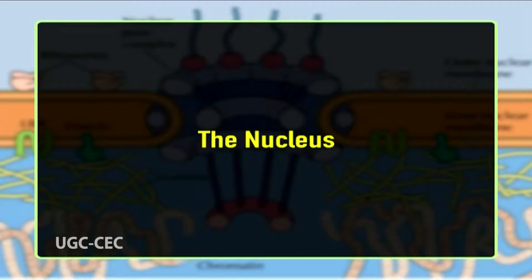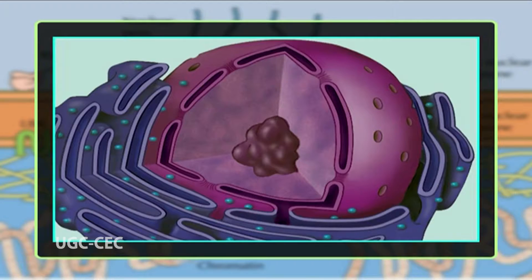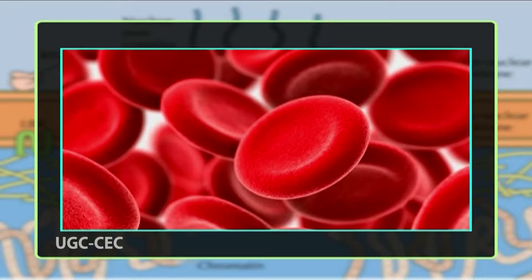The nucleus is the most prominent feature of a eukaryotic cell when viewed under the microscope. It is an almost universal structure of eukaryotic cells at some time during their life cycle, although some cells — such as the sieve tubes of vascular plants and the red blood cells of mammals — may lose their nuclei by the time they are fully differentiated.